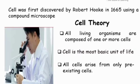The next thing we want to talk about is cell theory. Cell was first discovered by Robert Hooke in 1665 using a compound microscope. Cell theory: All living organisms are composed of one or more cells. Cell is the most basic unit of life. All cells arise from pre-existing cells. These are the three cell theories.